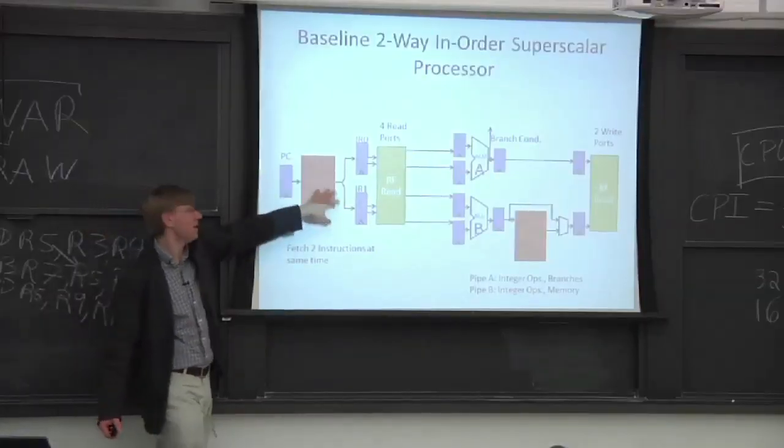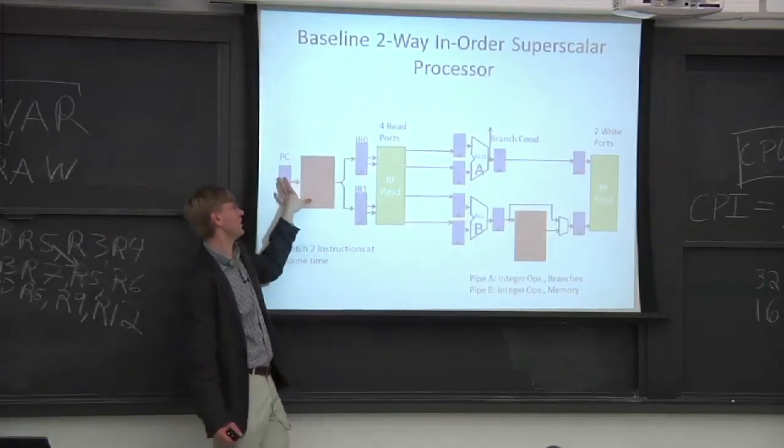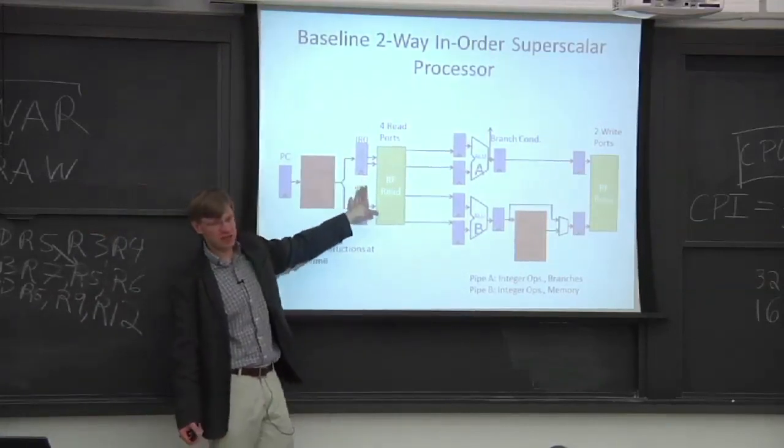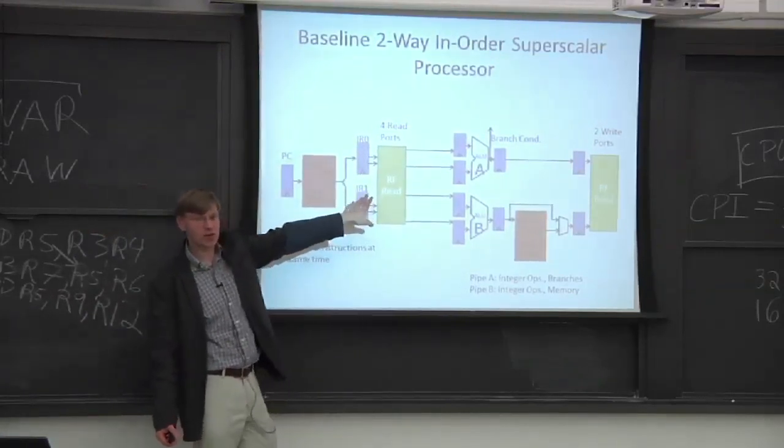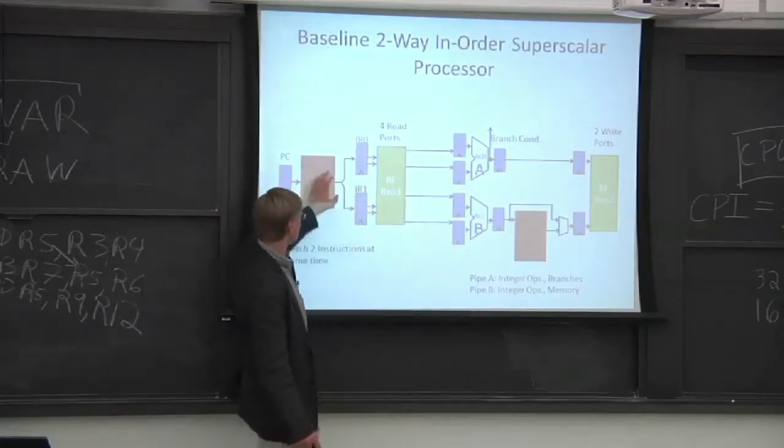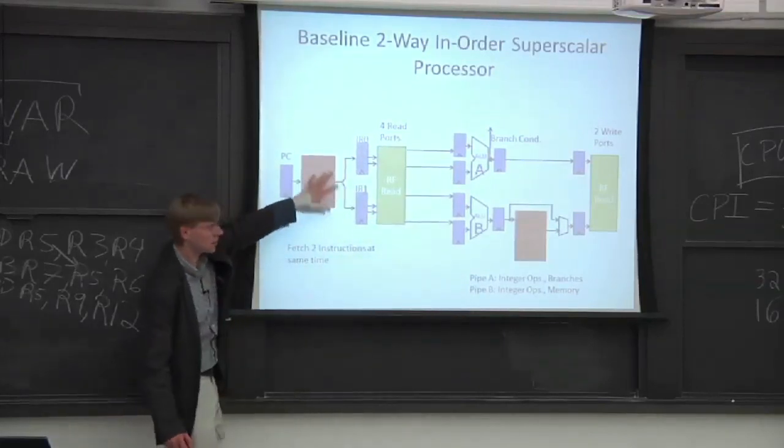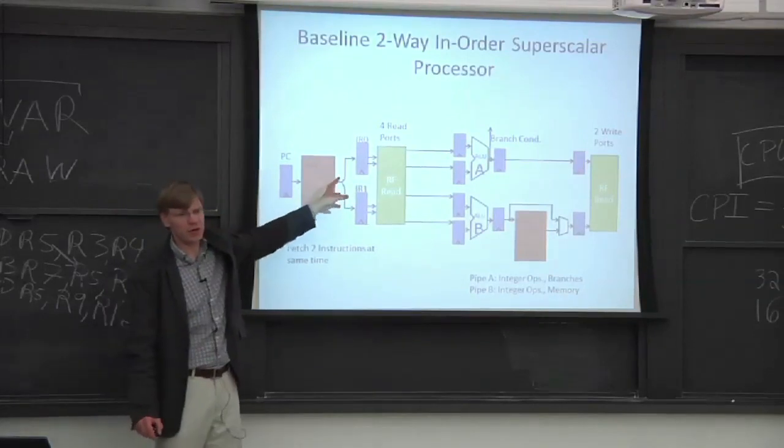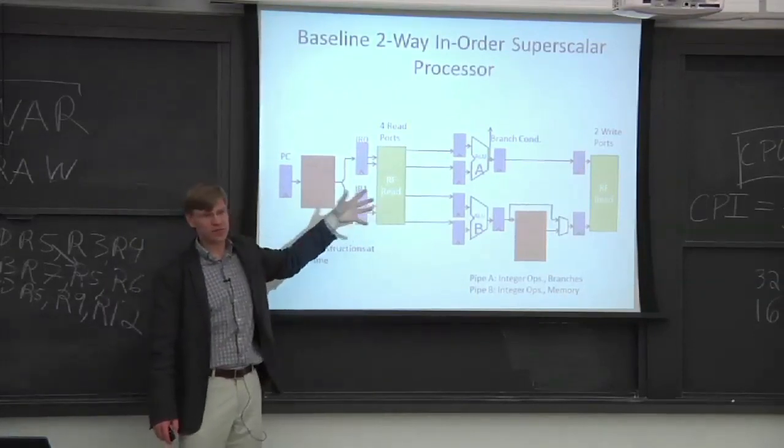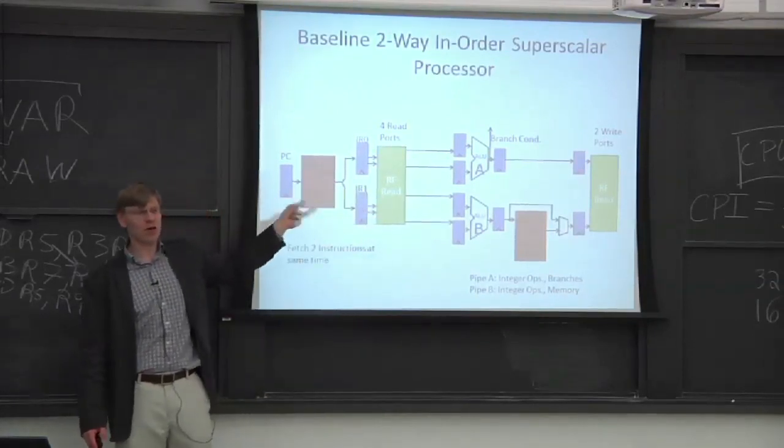So let's say there's some logic here which can pull out PC and PC plus four at the same time, because we're executing two instructions. We need to worry about alignment issues here. We need to worry about branches in the first instruction that we pull out of the two instructions.